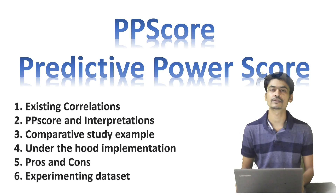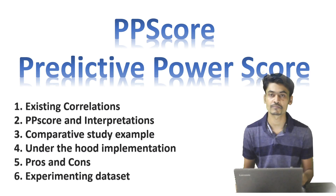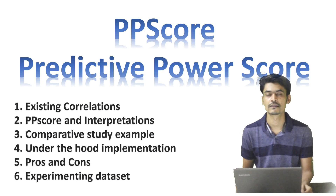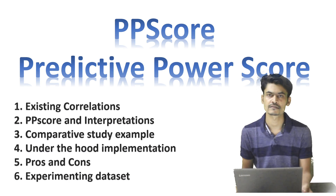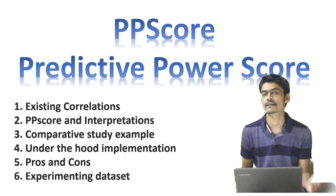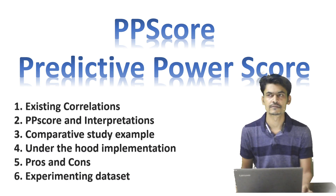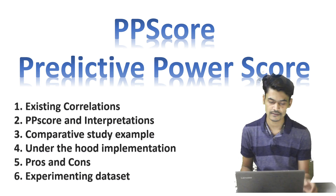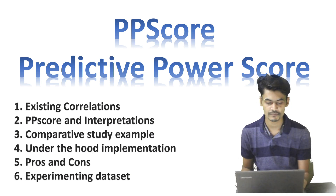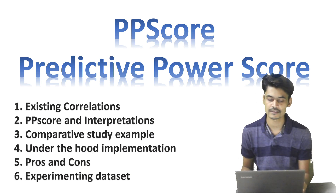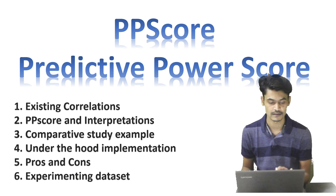Welcome to AI Catalyst. Today we are going to discuss the PP score. PP score isn't just like correlation matrices such as Pearson, Spearman, or Kendall. We'll discuss how it is different, how existing correlations work, and we'll look into the PP score and its interpretations — how do you interpret the values of PP score.